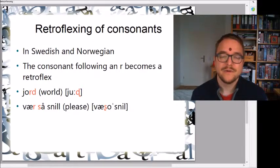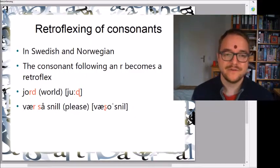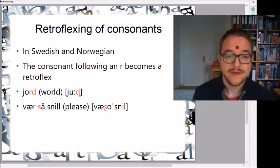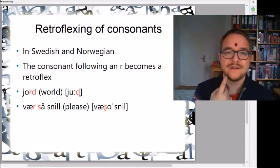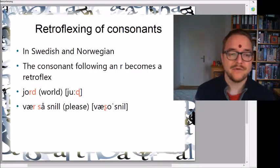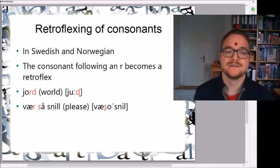Retroflex rotics can also influence the consonants that follow them — there can be a retroflexing of following consonants in languages like Swedish or Norwegian. For example, in the Swedish word 'jord', you don't really hear the R anymore, but the D has become a retroflex D, pronounced further back in the mouth. In Norwegian, R and S together can become a retroflex SH sound — 'vassosnil'.